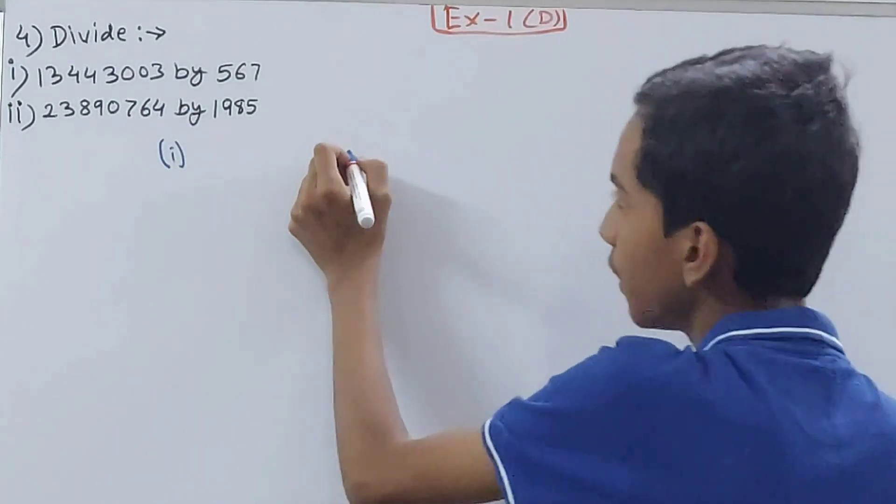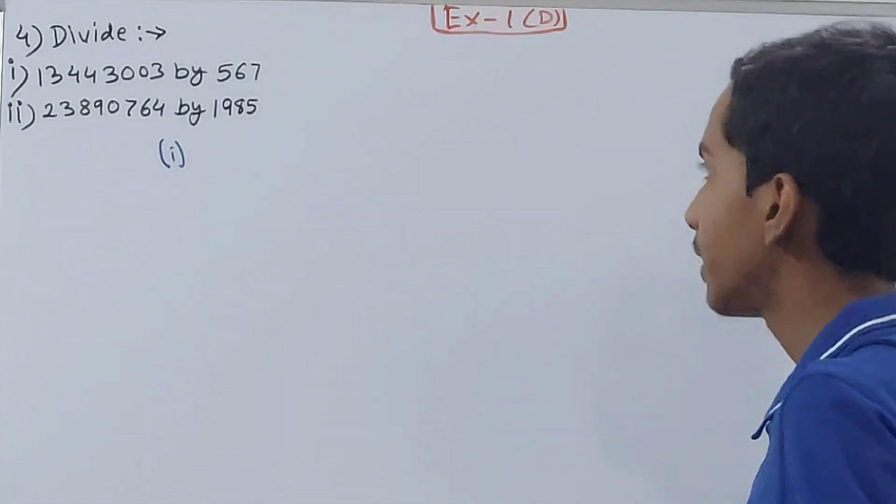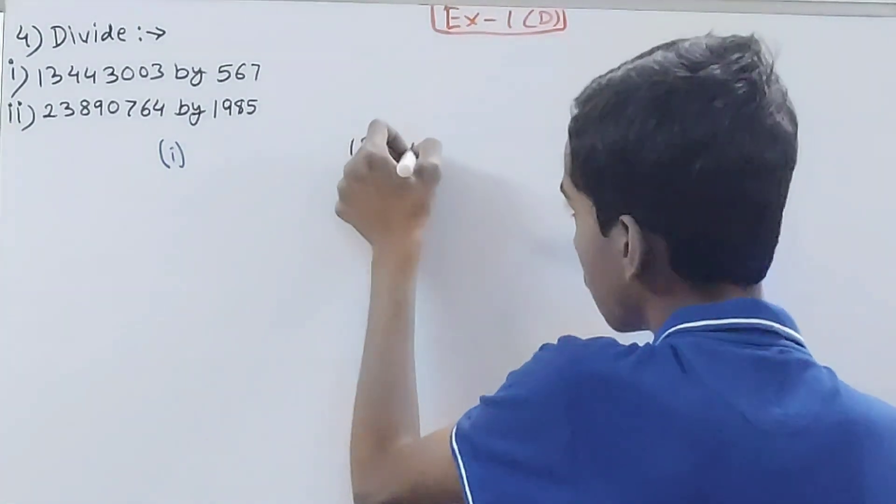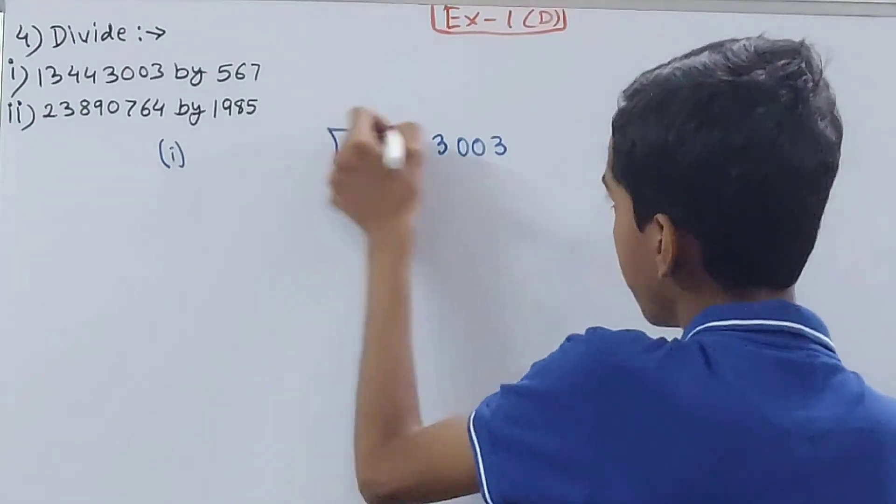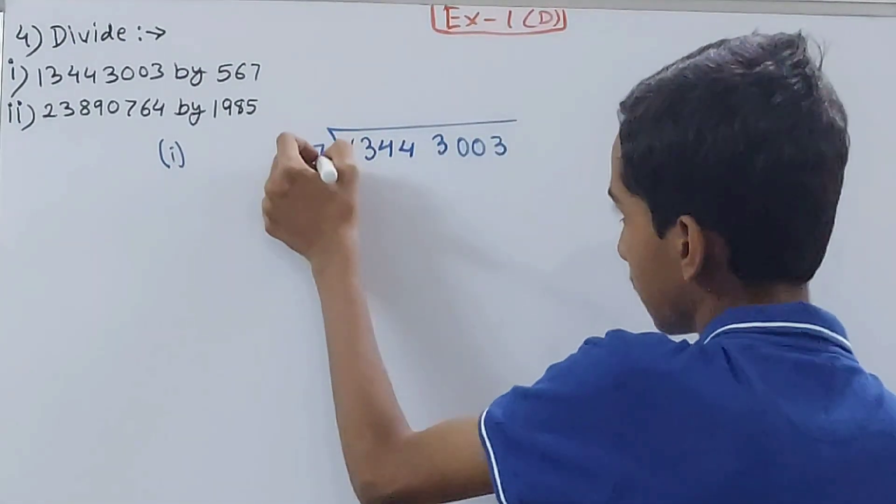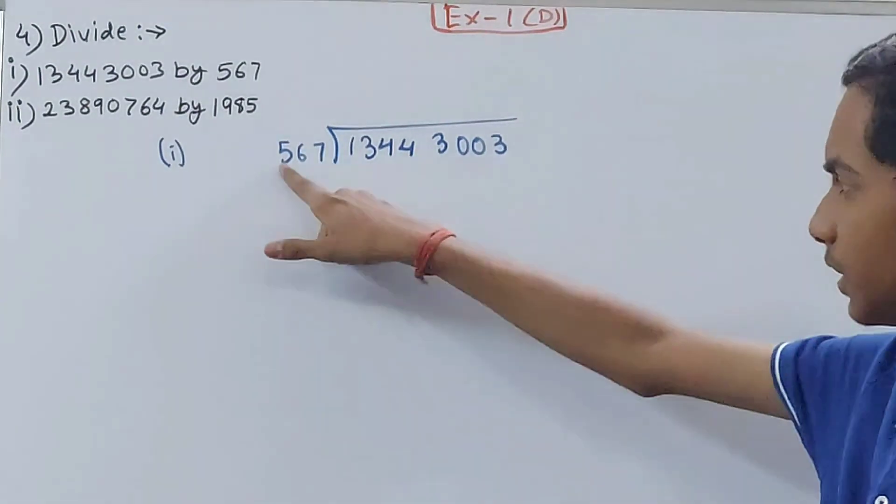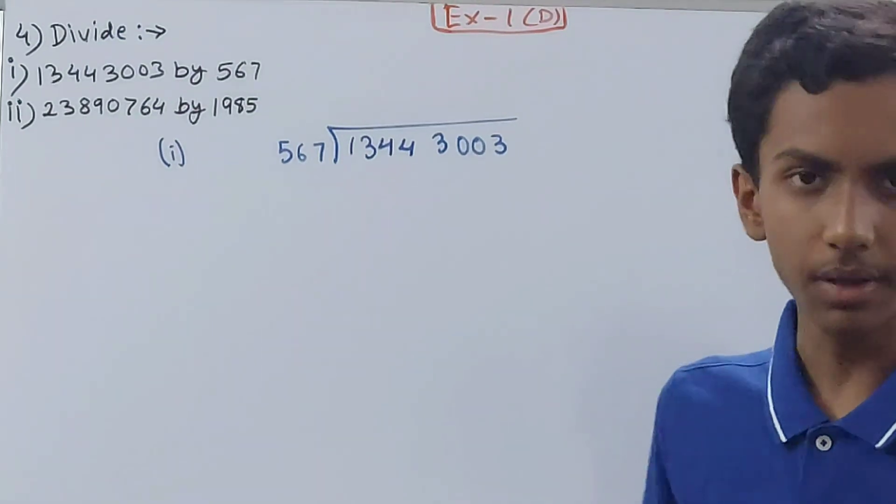This is 13443003 by 567. I will divide using the column method. 13443003 divided by 567. Now what we are going to do, we will see the first digit at the hundreds place of 567, that is 5.